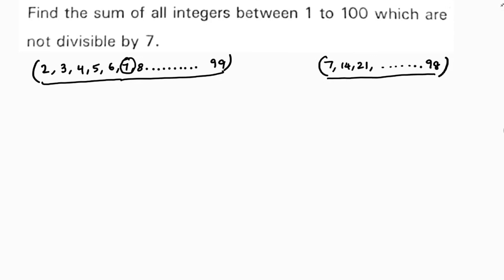So now here, a is 2. Common difference is a2 minus a1, 3 minus 2, which is nothing but 1. And an is 99. And number of terms are 98.